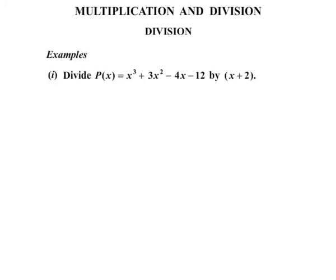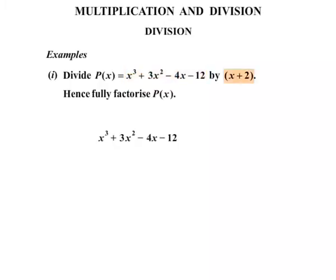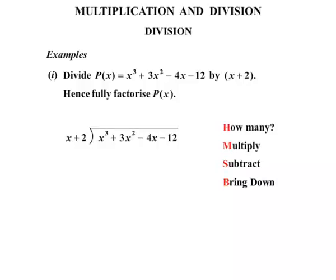Examples. We need to divide P of x, the polynomial in x, which equals x cubed plus 3x squared minus 4x minus 12, by x plus 2, and hence fully factorize the polynomial. Let's write that polynomial down for division by x plus 2 using the big division sign. We're going to use HMS bring down: how many, multiply, subtract, and bring down.